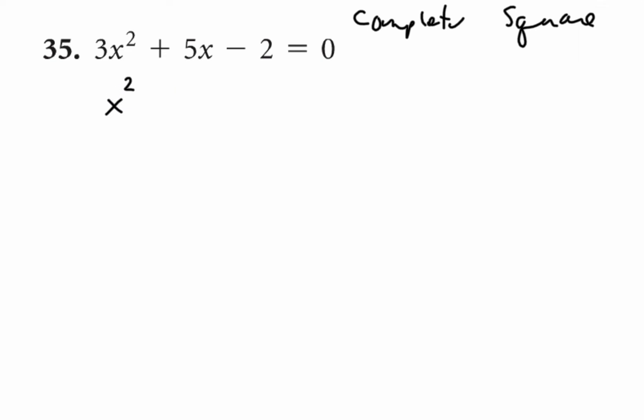So I'll rewrite this as x squared plus 5 thirds x minus 2 thirds equals 0 over 3, which is just 0. Okay, so I divided everything by 3.